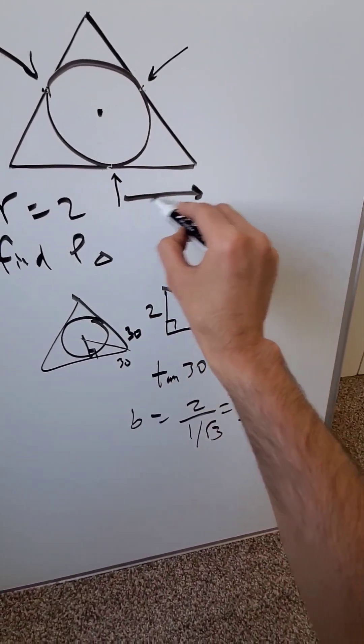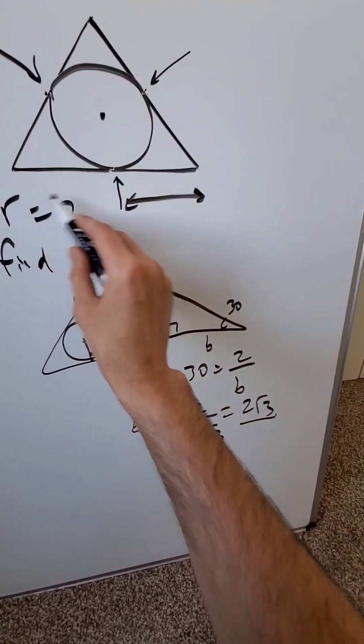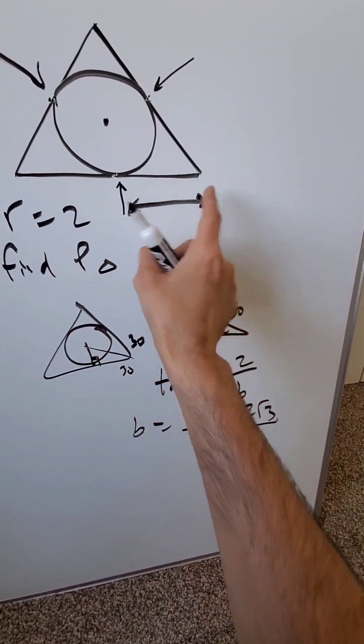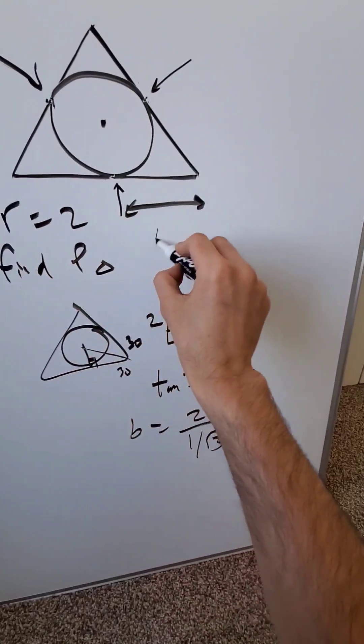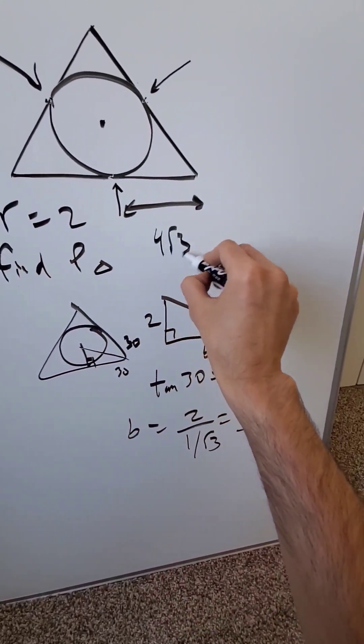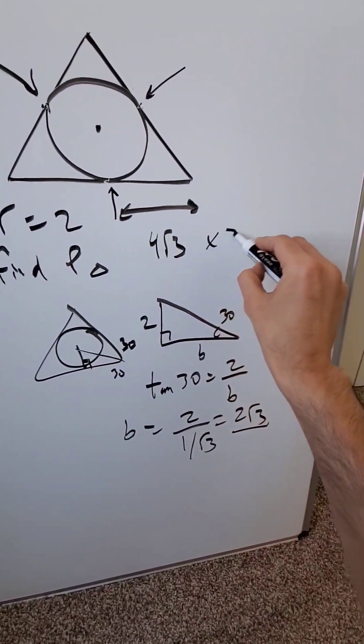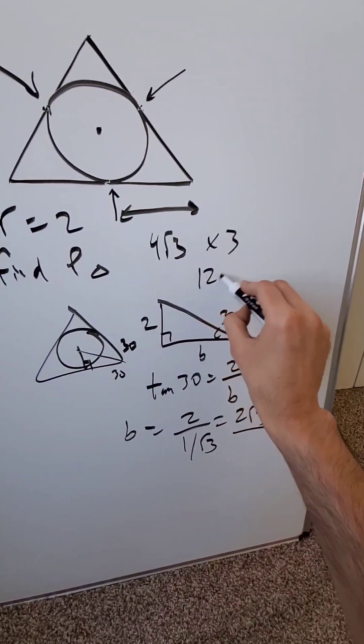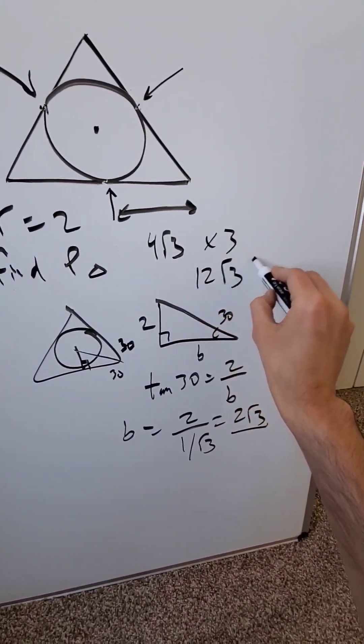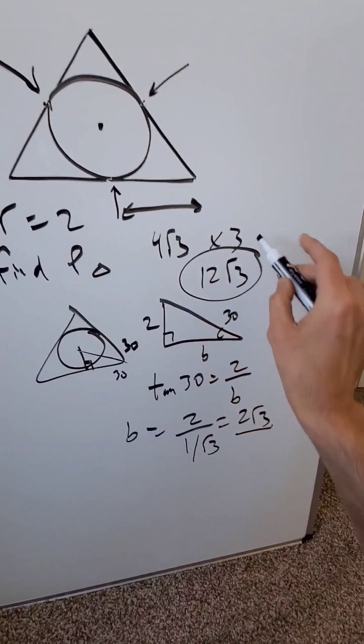That's giving me from here to here — just half the side. Multiply by 2 to get the full side, giving 4√3. That's the side of the triangle. With three sides, the perimeter is 12√3 and you are done.